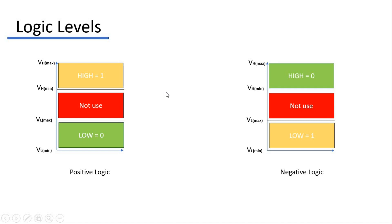Our next topic is logic levels. Logic levels are the voltages used to represent one and zero. In positive logic, one is represented by high voltage and zero is represented by low voltage. Whereas in negative logic, one is represented by low voltage and zero is represented by high voltage.